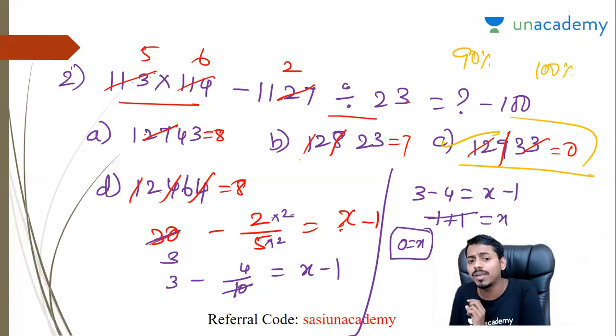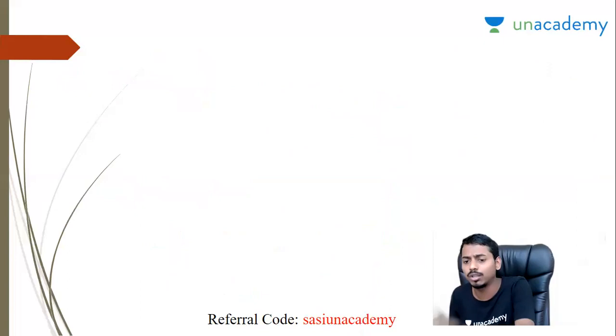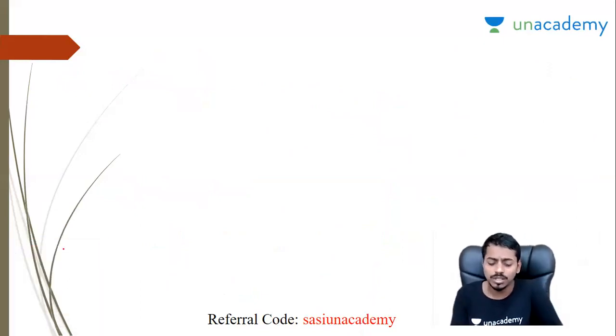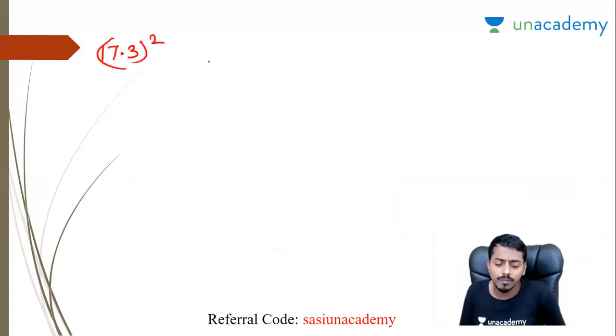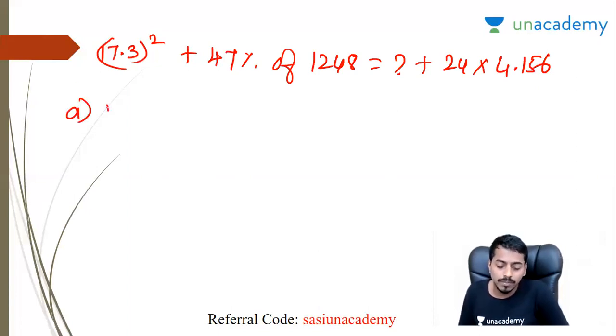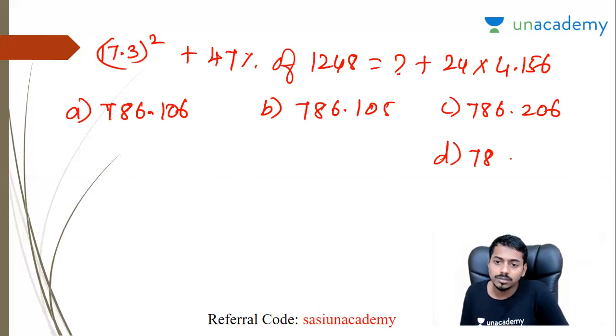Next question: 17.3 the whole square plus 47 percentage of 1248 equal to question mark plus 24 into 4.156. Option A 786.106, B 786.105, C 786.206 and D 786.306. So first solve this and then choose the option. So 17.3, we solve it.